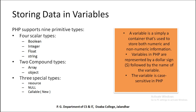The next topic is how to store data in variables. PHP supports eight primitive types, but with one new type it is categorized into three groups: first, four scalar types — boolean, integer, float, and string; second, two compound types — arrays and object; and third, three special types — resource, null, and callable. Callable is the new data type.